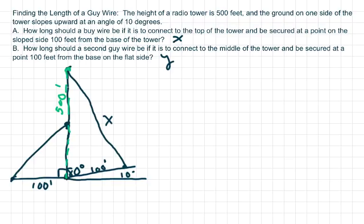And on the ground on one side of the tower slopes, it slopes up here by 10 degrees. Okay, so this means this is 80 degrees.